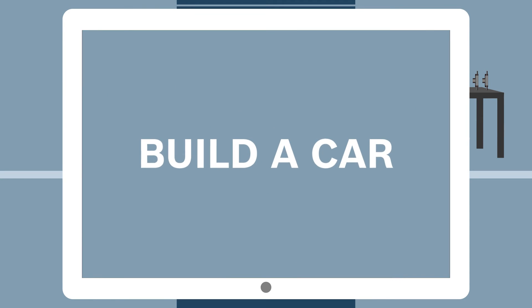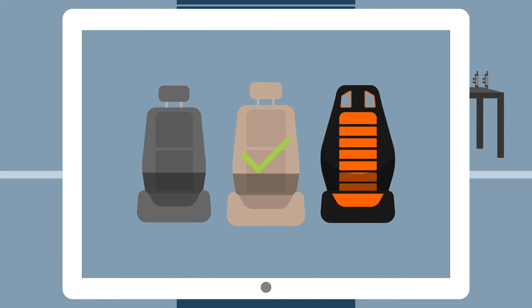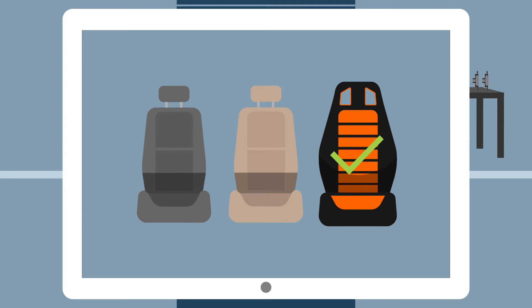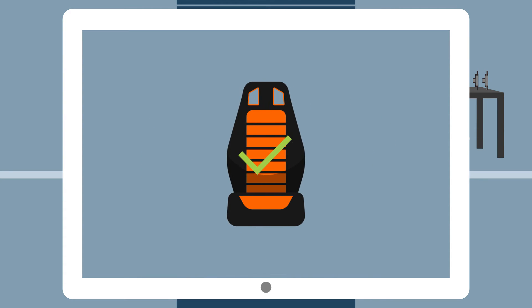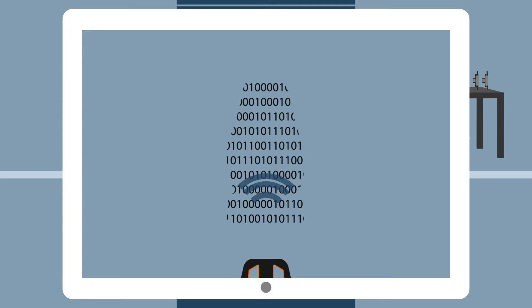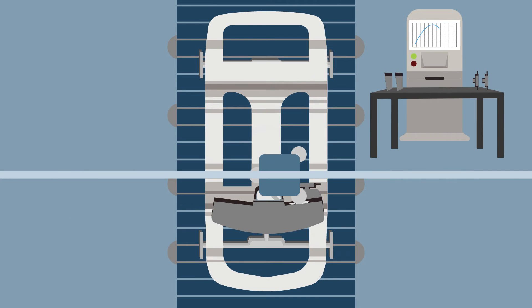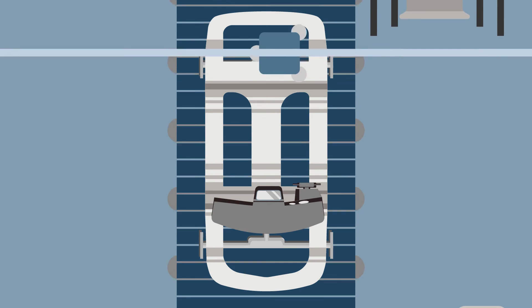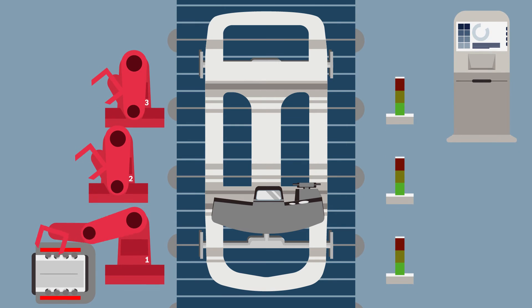Suppose you change your mind about your car's seats. Not a problem. Thanks to Industry 4.0 technology, the car manufacturer has real-time data from the complete production process. The configuration change is made and confirmed to the customer, and orders for the new seats are sent to the supplier.